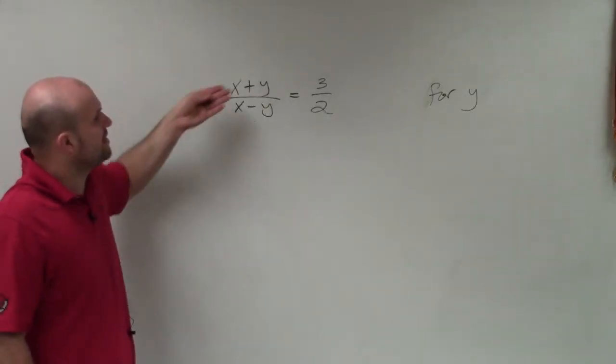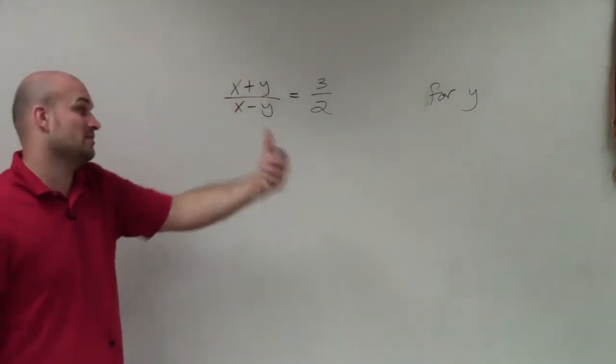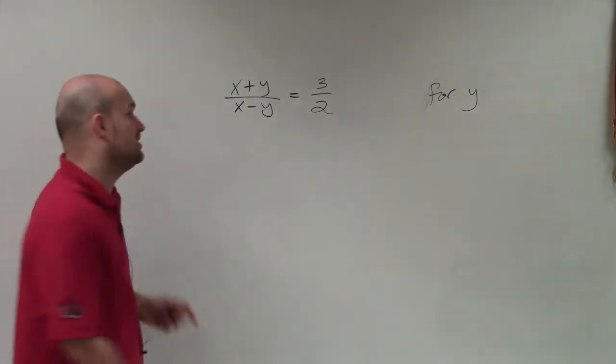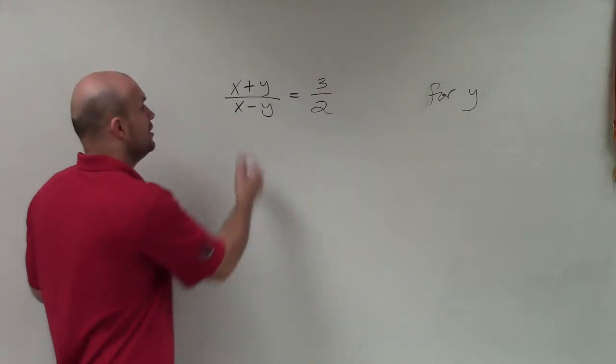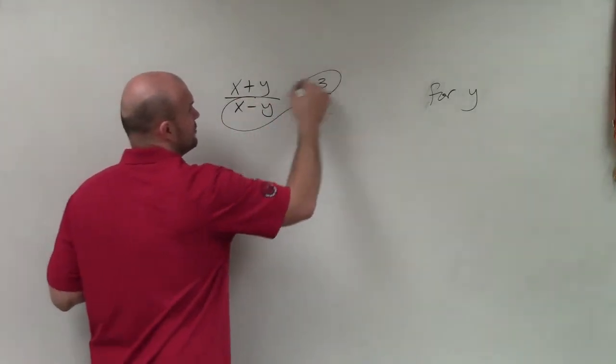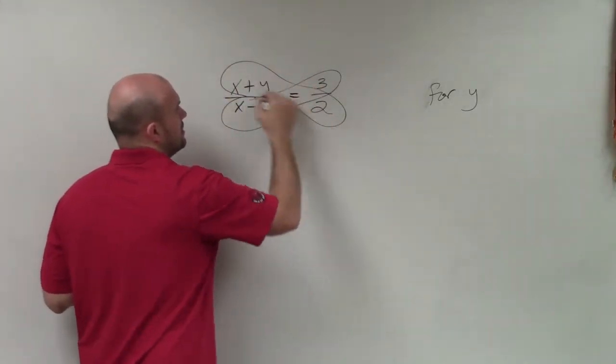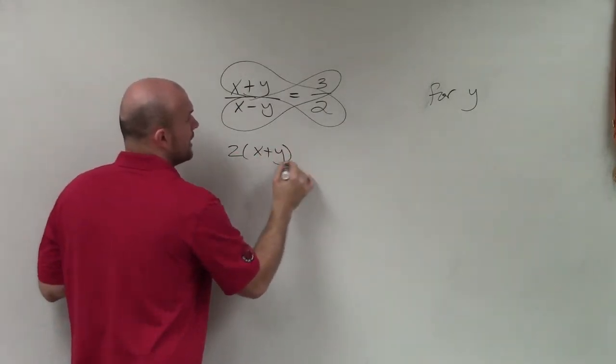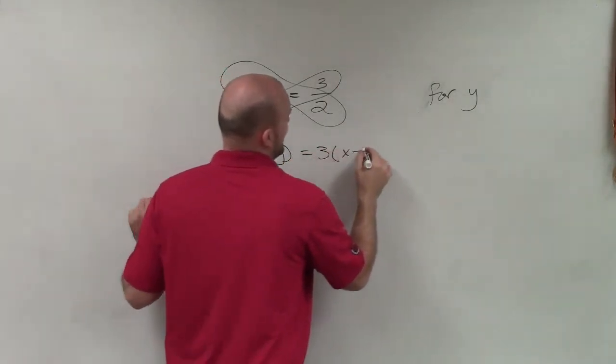So I need to get somewhere where I do not have these fractions. And what I notice is right now I have a proportion. So when I have a proportion, I can apply the cross product, which says that I can multiply cross products and they're going to be equivalent. Therefore, 2 times x plus y is equal to 3 times x minus y.